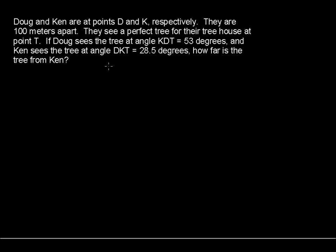Doug and Ken are at points D and K respectively. They are 100 meters apart. They see a perfect tree for their treehouse at point T. If Doug sees the tree at angle KDT equals 53 degrees, and Ken sees the tree at angle DKT equals 28.5 degrees, how far is the tree from Ken?